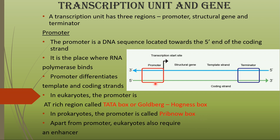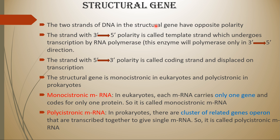Apart from the promoter, some other enhancers are required for transcription. The promoter is a DNA sequence located towards the 5 prime end of the coding strand which contains more AT-rich region — that is the TATA box, where TATA means thymine-adenine. In prokaryotes, the promoter is called the Pribnow box.